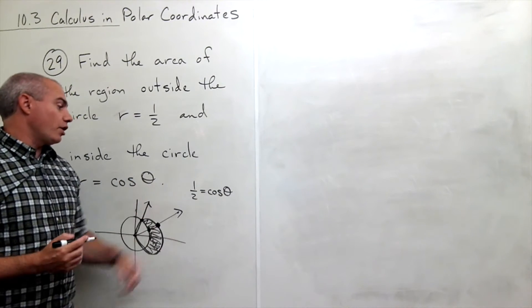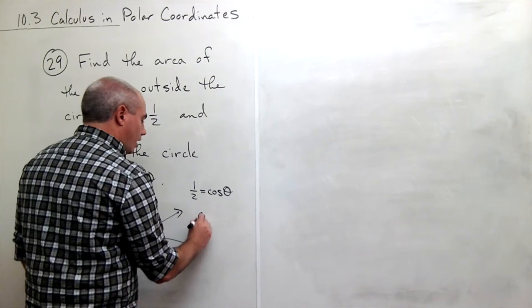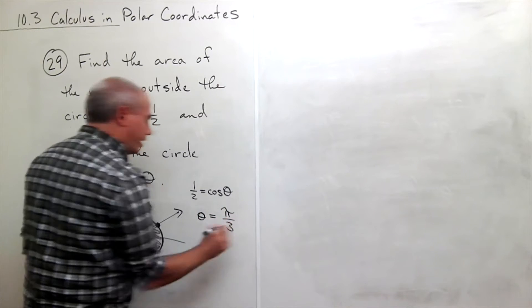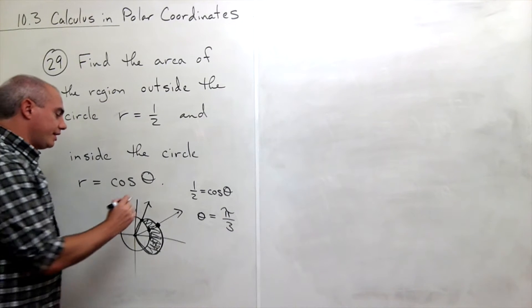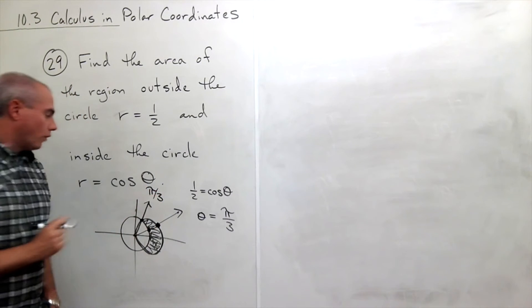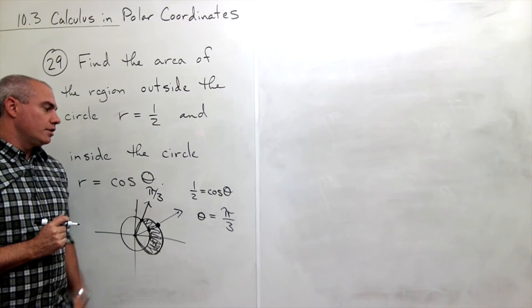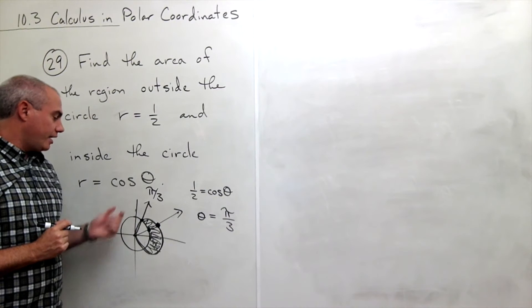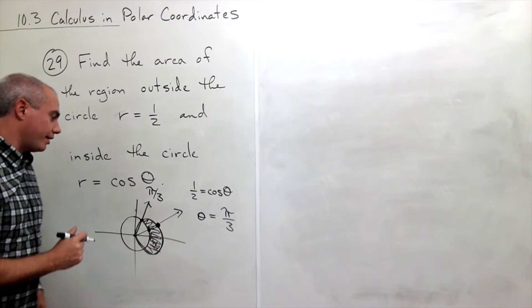Well, I believe cosine of pi over three would get the job done here. So this is pi over three. So cosine of pi over three is a half and we have our angle here.